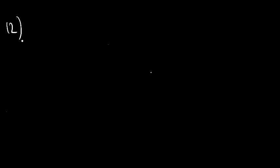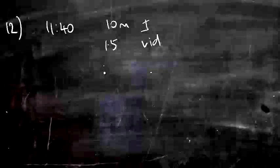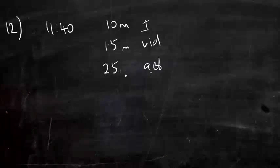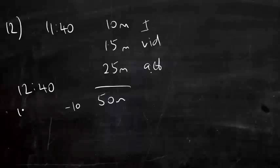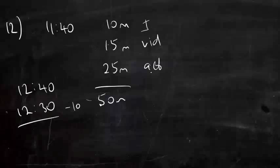A lesson begins at 11:40. The teacher prepares a 10-minute introduction, followed by a 15-minute video clip, and then a 25-minute activity. At what time does the activity end? The total time for all of the different activities is 50 minutes, and we need to add that to the starting time. So add an hour and take off 10 minutes is probably the quickest way to get 12:30.